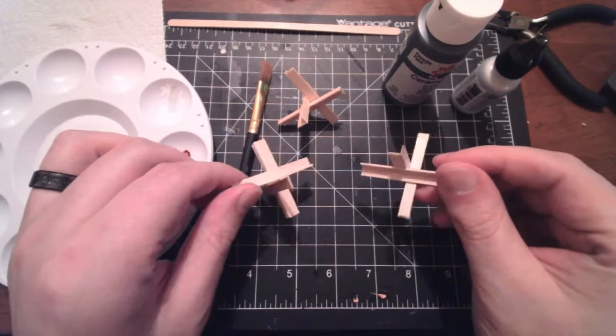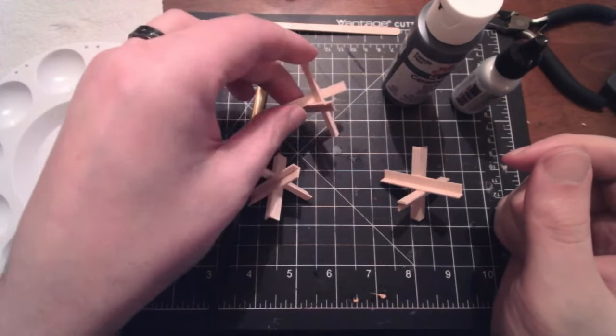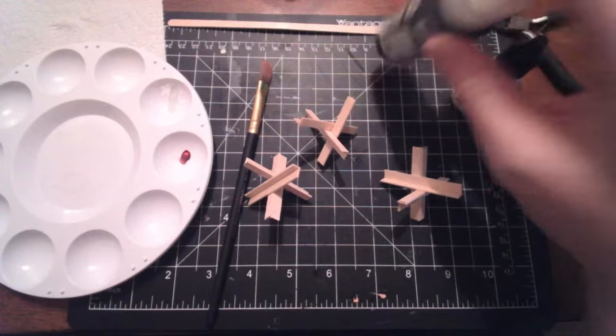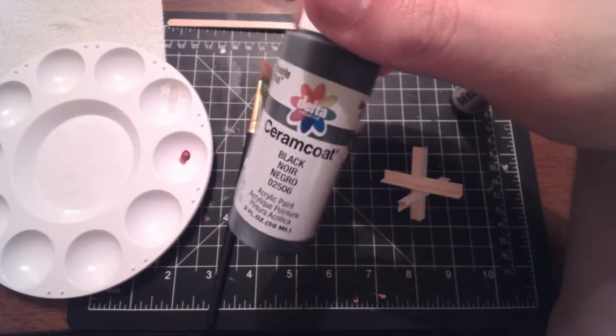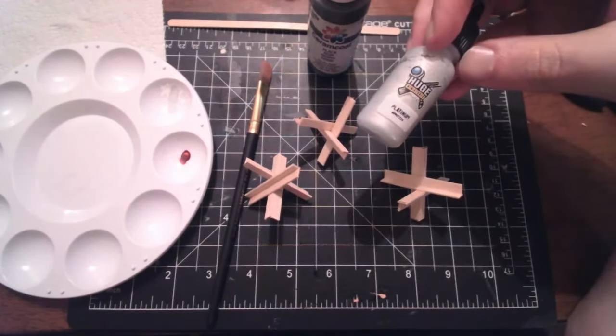I did a batch of these, and the first thing we're going to do is just paint them all solid black. Craft paint is totally good here. Plaid, the makers of Ceramcoat, is a friend of the channel. So, using them.